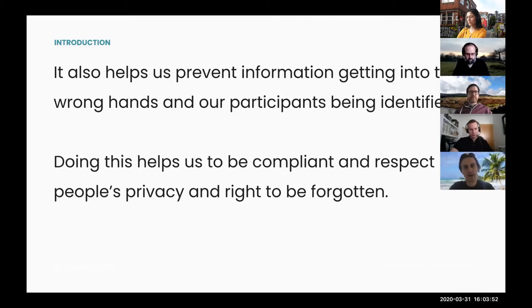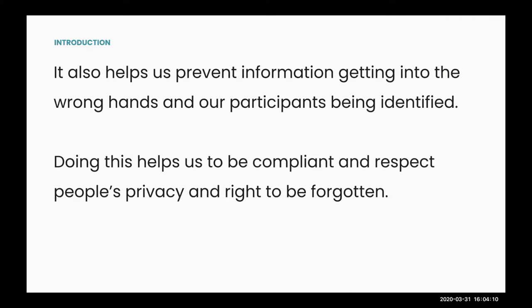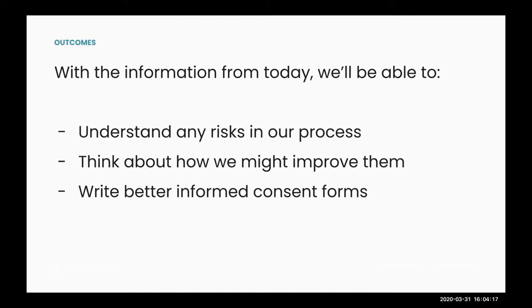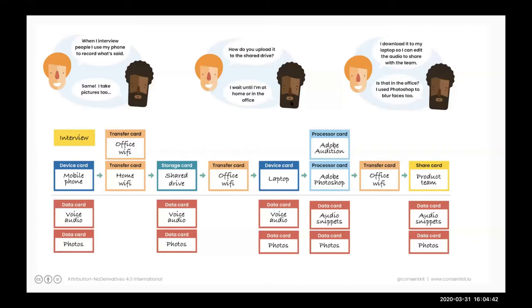Thinking about how data moves through our process helps us prevent that information getting into the wrong hands — things that touch on security — and also thinking about the potential for participants to be identified and how we anonymize that data. Doing this not only helps us be compliant with things like GDPR, it also helps respect people's privacy and the right to be forgotten. What we're going to do today is basically map out a single process, understand where any risks might be, think about how we might improve how we handle that data, and potentially write better informed consent forms.